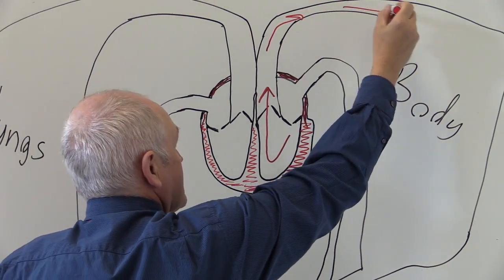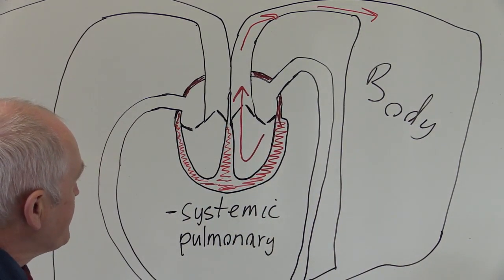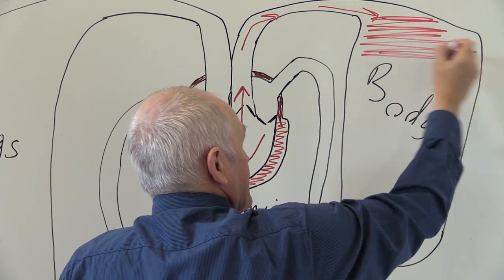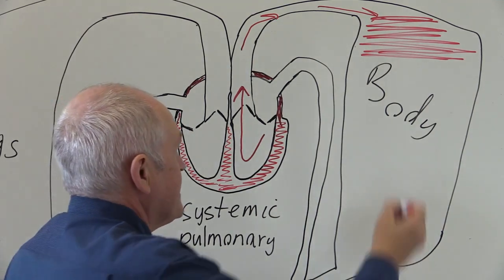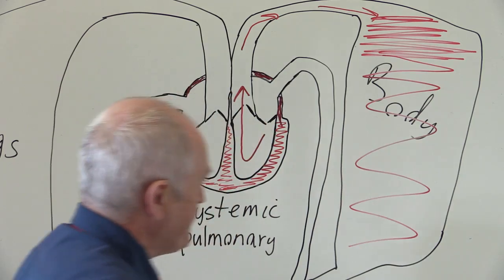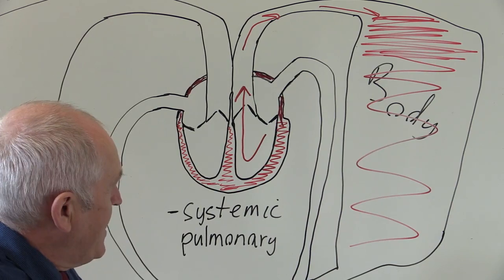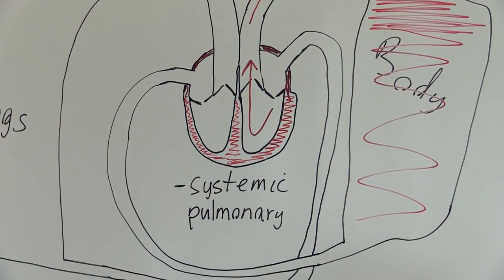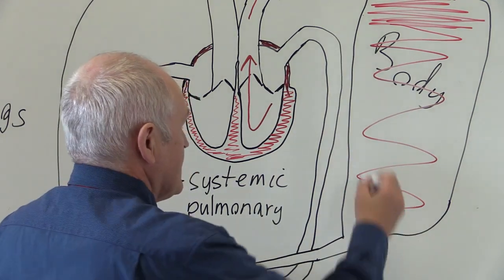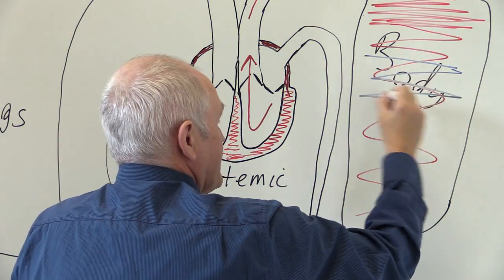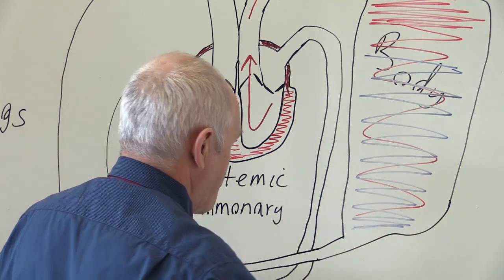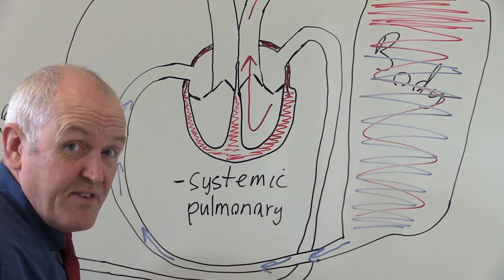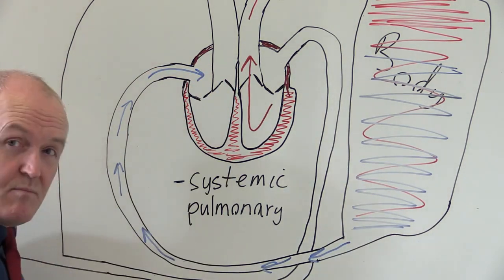Oxygenated blood is going to go into the systemic circulation to all parts of the body. When it arrives in the tissues it's going to be highly oxygenated, therefore bright red. But as this blood goes through the tissues the percentage of oxygen in it is going to be reduced down to 70 to 80 percent saturations, and the blood is going to appear dark red because it's carrying less oxygen. Traditionally in physiology we represent the dark red blood as blue — it's not blue of course, it's dark red — and that dark red blood is going to drain into the large veins, eventually going into the inferior and superior vena cava, taking blood to the right atrium.